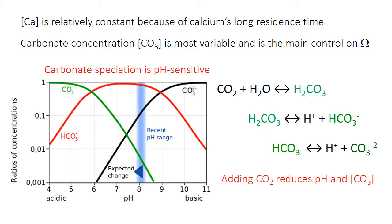The carbonate system is fairly complex. CO2 dissolved in seawater forms carbonic acid (H2CO3), which then dissociates into bicarbonate ions and ultimately carbonate ions plus protons or hydrogen ions. Adding CO2, for example from decaying organic material into the deep ocean, reduces the pH and shifts the balance of these equations, ultimately reducing the carbonate ion concentration — the black line in this graph — in favor of bicarbonate. So as pH decreases, when there's more CO2 in the water, the carbonate concentration goes down, and therefore calcium carbonate saturation, or omega, also decreases.